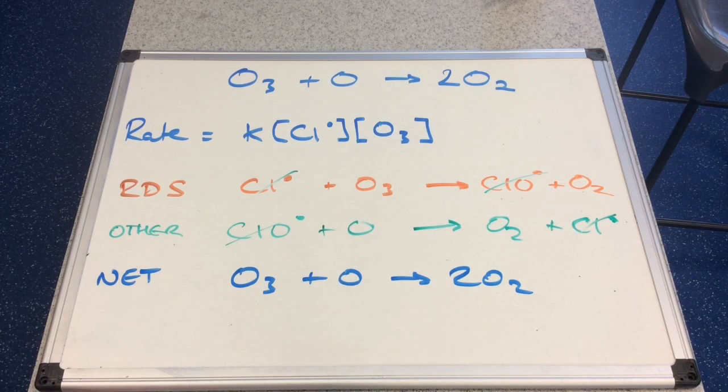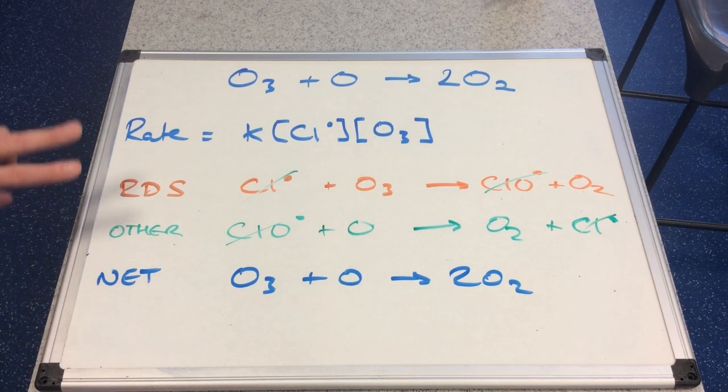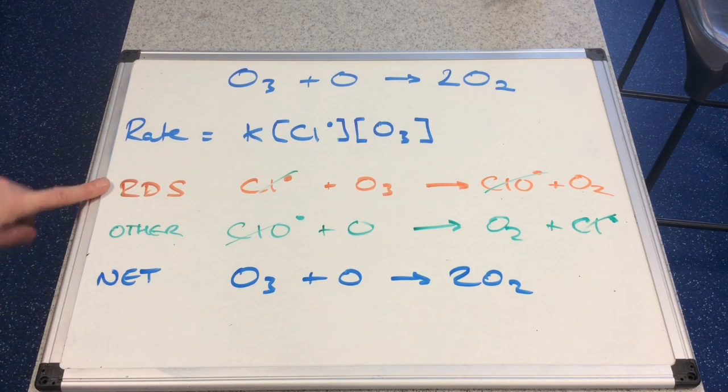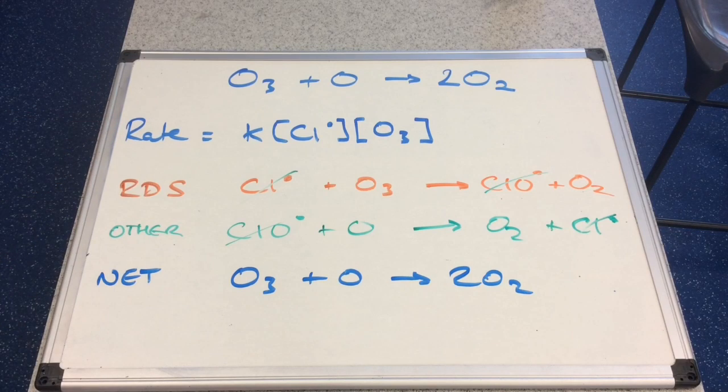Have we satisfied the rules? Yes, we have. These two add up to make the net equation. And the rate determinant step is consistent with the rate equation. So it's a valid mechanism.